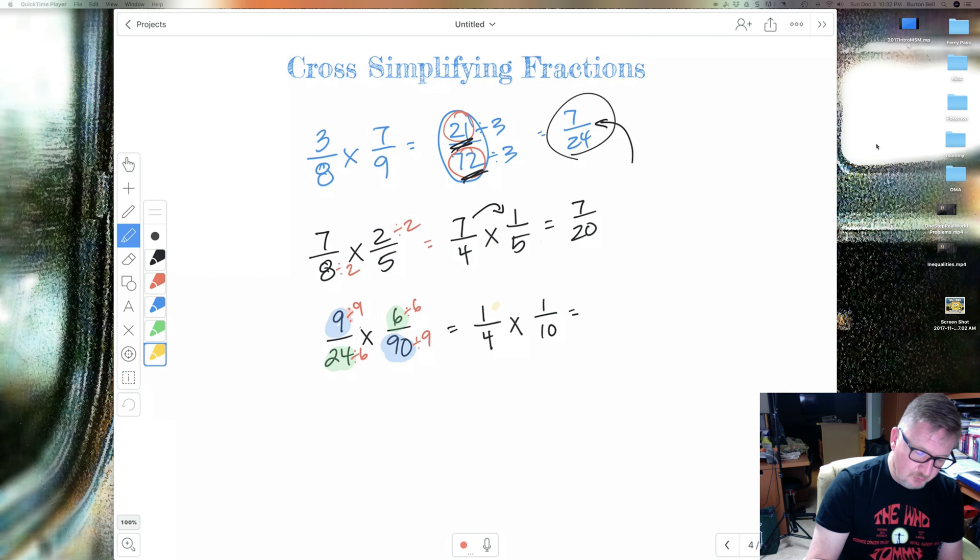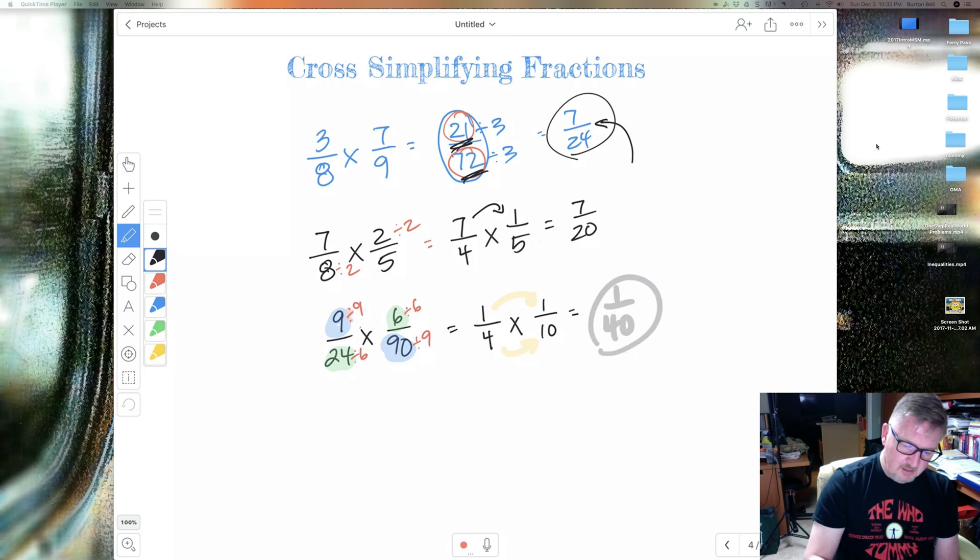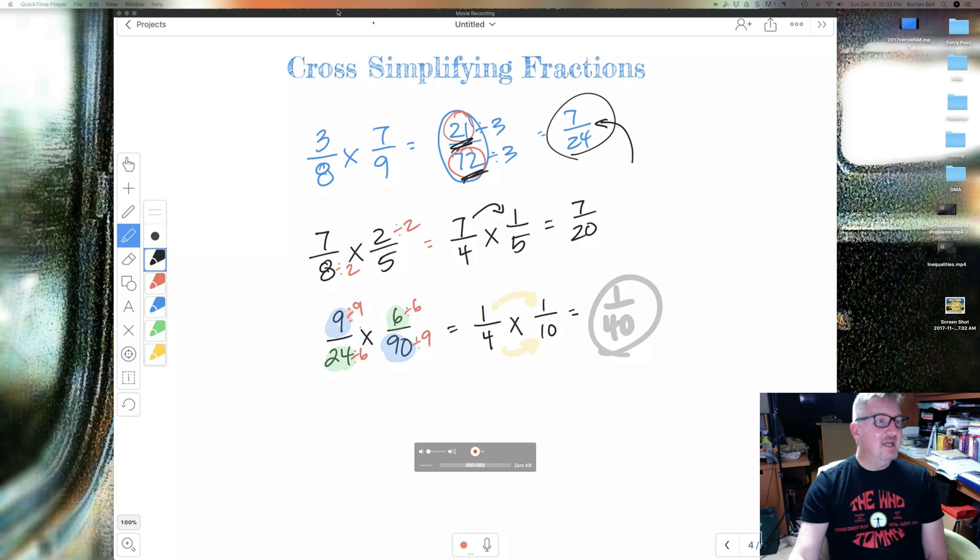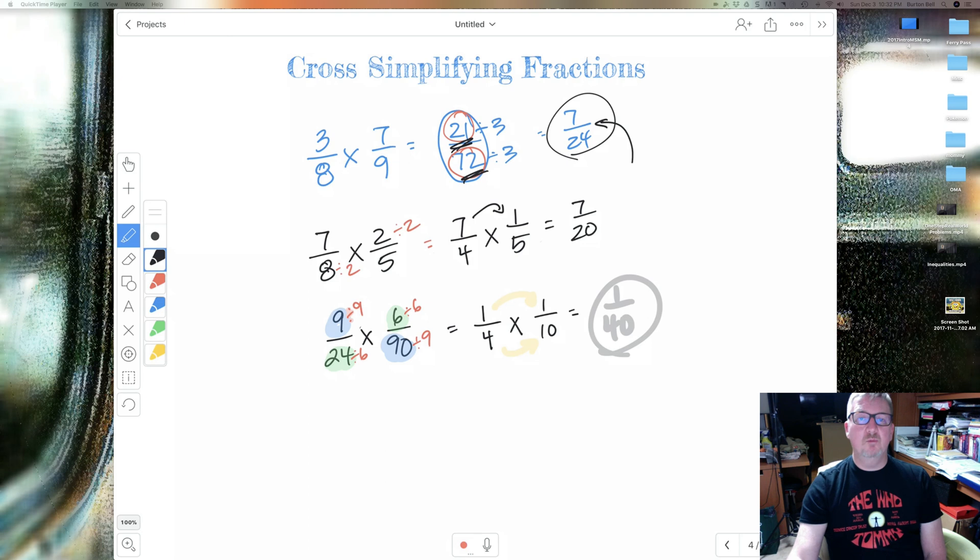Now, we just multiply and then the tops and the bottoms. So 1 times 1 is 1. 4 times 10 is 40. That's my final answer, and it's simplified. Can't get any easier than that. I encourage you to use that every time you're multiplying fractions.